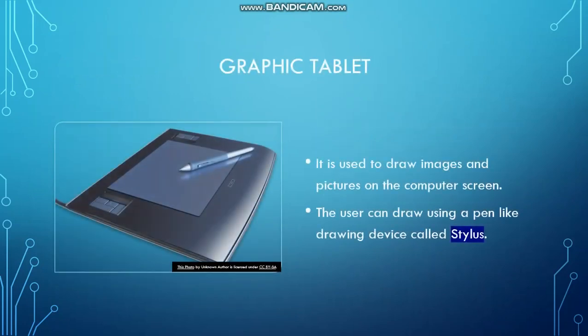Our next input device is a graphic tablet. The short form of tablet is tab, which we use nowadays. Graphic tablets are used to draw images or pictures on the computer screen. By using a tablet we can draw an image or picture on the computer screen, and it uses a device called a stylus. A stylus looks like a pin, and by using that stylus we are able to draw images or pictures on the computer screen.